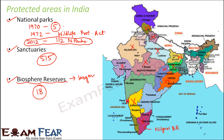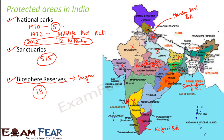You have the Sundarbans biosphere reserve in West Bengal. You have Nanda Devi biosphere reserve in Uttarakhand. You have Panchmari biosphere reserve in Madhya Pradesh. Each of these biosphere reserves may include other protected areas within it — for example, Panchmari biosphere reserve might include Panchmari National Park and possibly other national parks. So a biosphere reserve is a bigger entity than a national park or wildlife sanctuary.